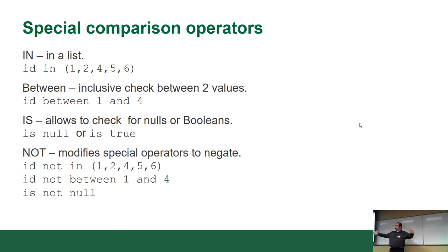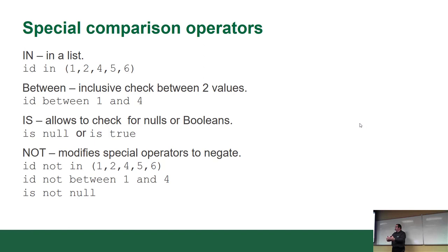If you don't have a finite list or aren't sure what values fall between two points, use BETWEEN — for example, ID BETWEEN 1 AND 4 gives you 1, 2, 3, 4. If 3 doesn't exist, it gives you 1, 2, and 4. You don't need to know whether or not the values in between exist.